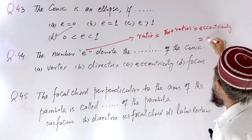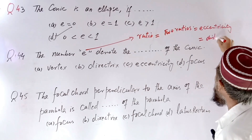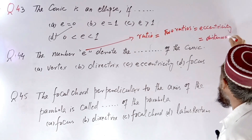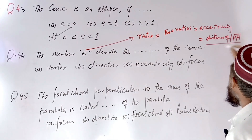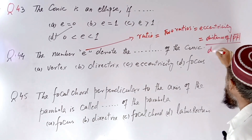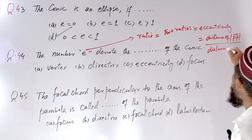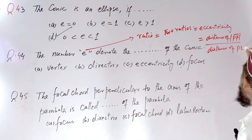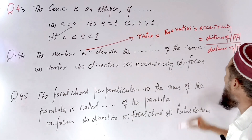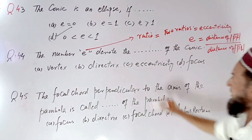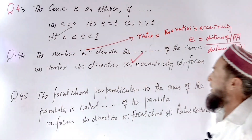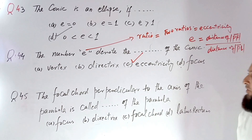So we write the formula: the distance of the focus to a point divided by the distance from that point to the directrix — that formula is called eccentricity. And here C is the correct option.